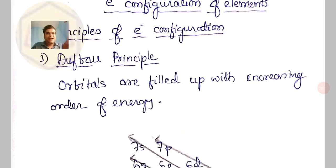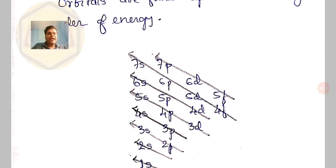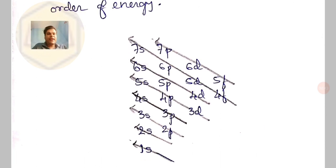The first one is the Aufbau principle. What this Aufbau principle says is very simple — orbitals are filled up in increasing order of energy. So whenever we are writing electronic configuration, we cannot fill orbitals according to our convenience. Lowest energy orbitals will be filled with electrons first and then we go to higher energy orbitals.